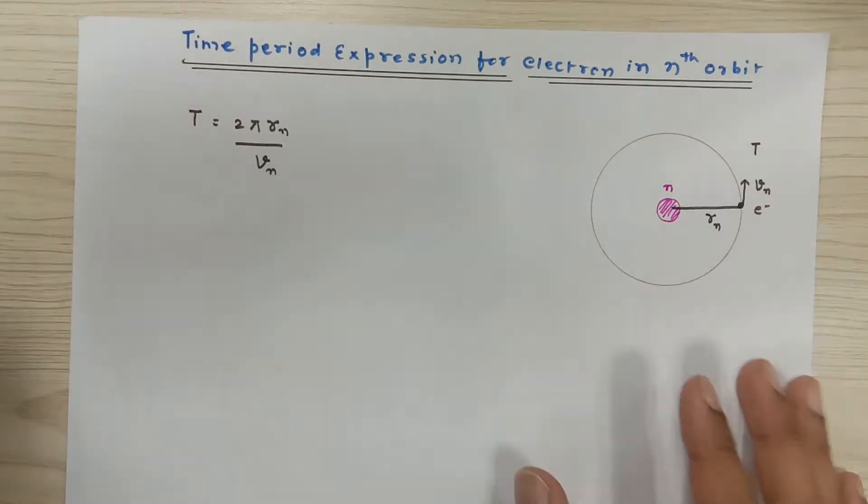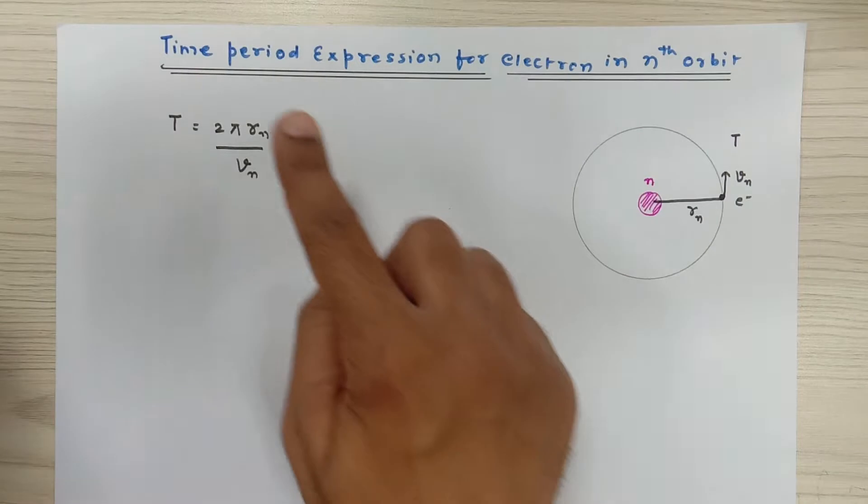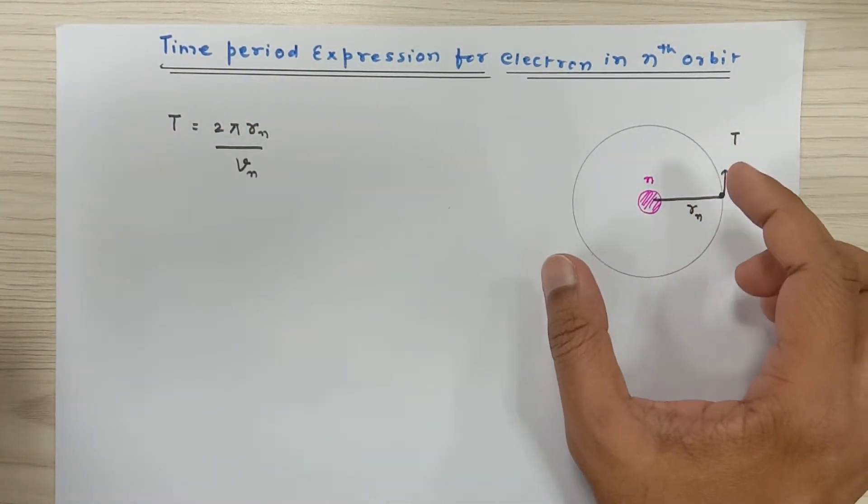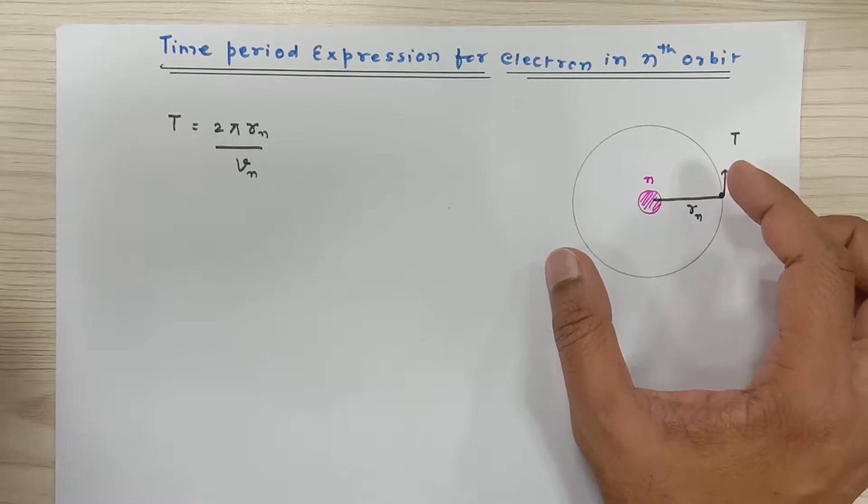Hello scientific brilliant people, how are you today? So today I am going to discuss the time period expression for an electron in the nth orbit of the atom, and this concept is related to Bohr's atomic model.